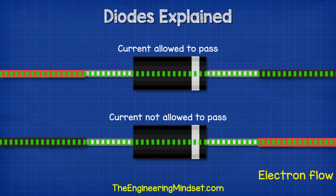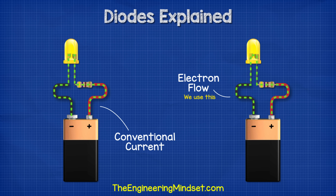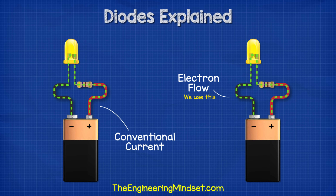I've animated this video using electron flow, which is where the electrons flow from the negative to the positive. However you might be used to seeing conventional flow, which is traditional in electronics engineering and is where the electrons flow from the positive to the negative. Electron flow is what's actually occurring but you might still come across conventional current as these explanations are easier to understand. Just be aware of the two and which one we're using.